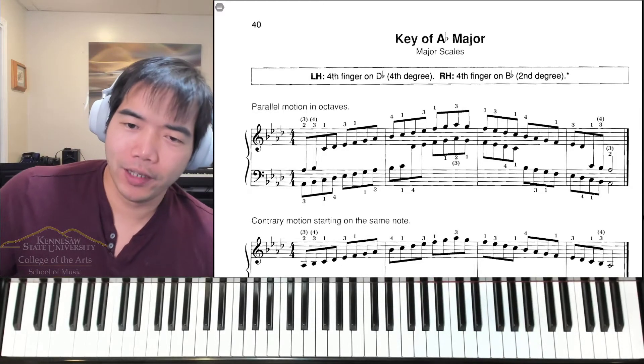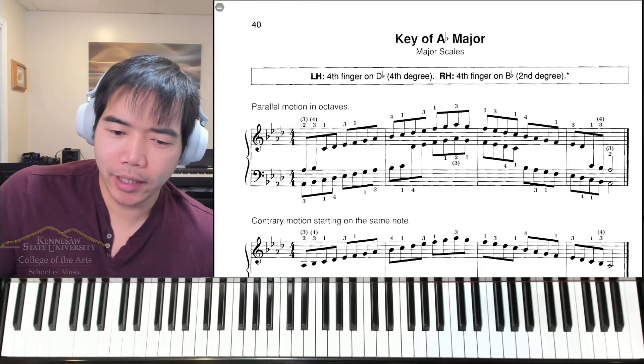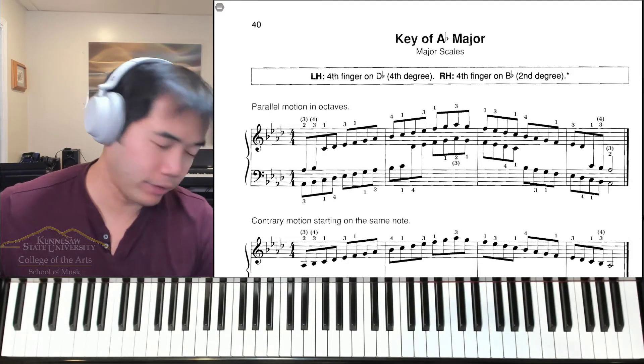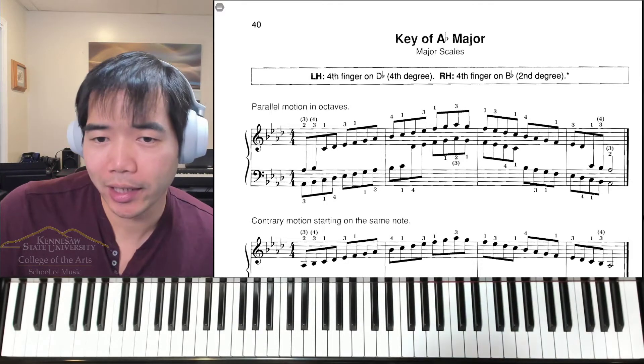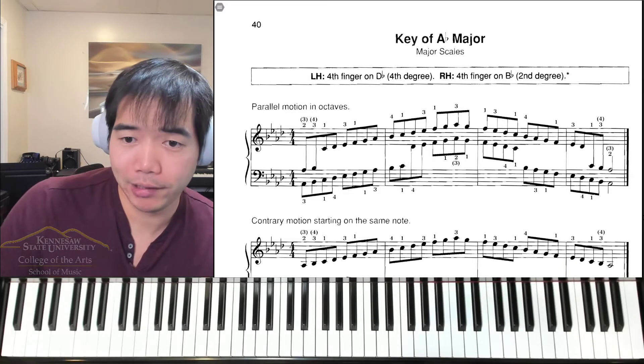We're going to take a look at A flat major scales, hands together, one octave. In the key of A flat major, we have four flats: B flat, E flat, A flat, and D flat.